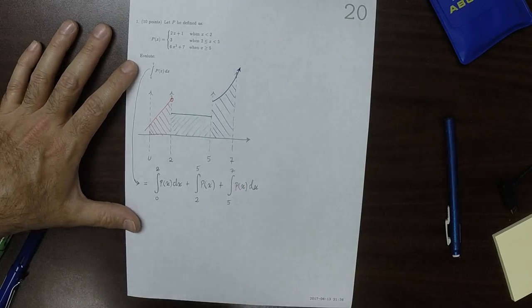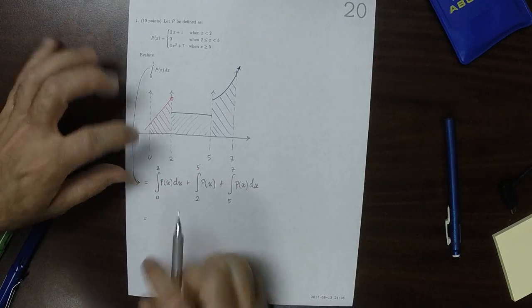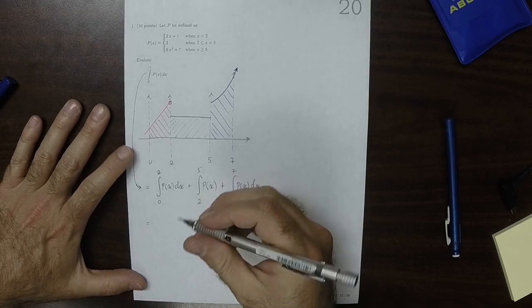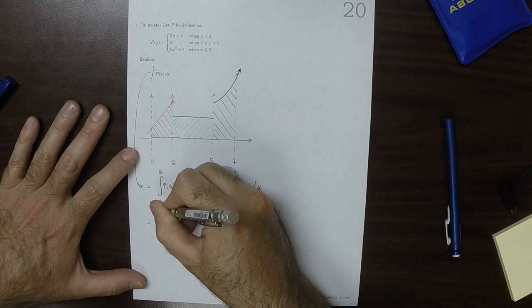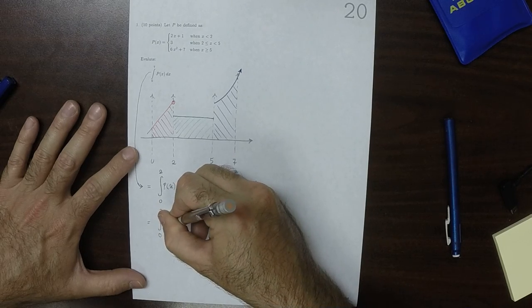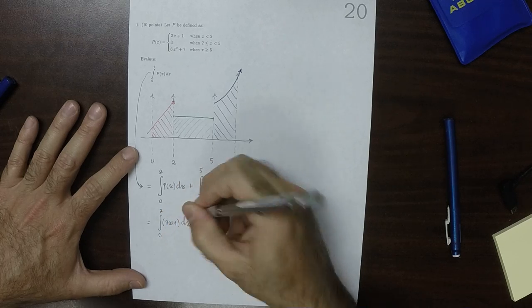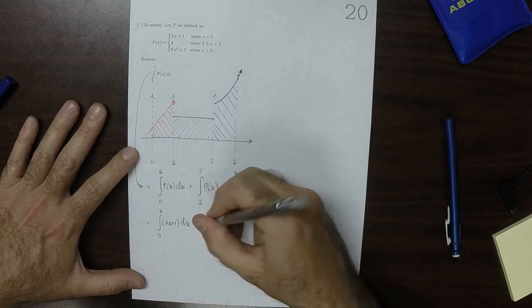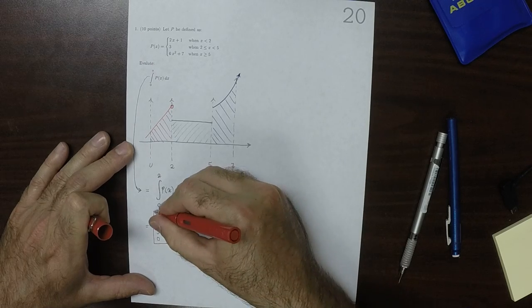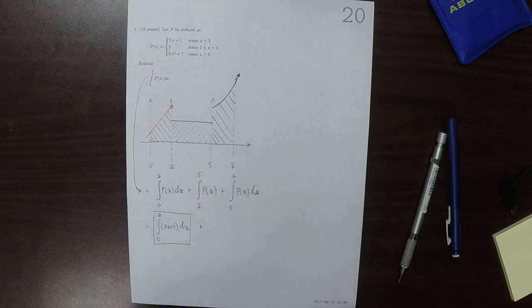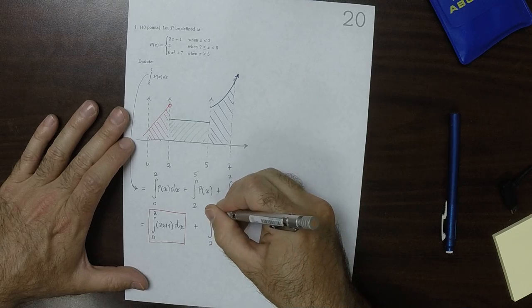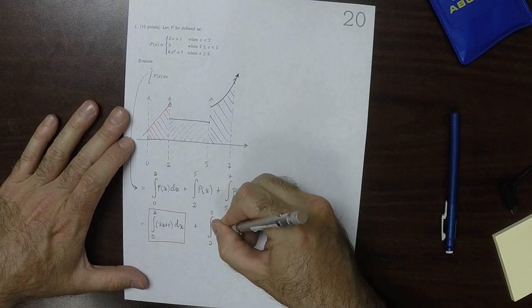And then in each one of these integrals, because we've restricted the domain, this is only between 0 and 2, this only between 2 and 5, this only between 5 and 7, that means that we can say that this is the integral from 0 to 2 just using 2X plus 1. That is to say, this is the red part. And then plus the integral from 2 to 5 of 3DX.